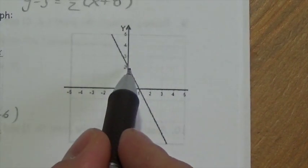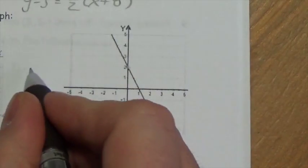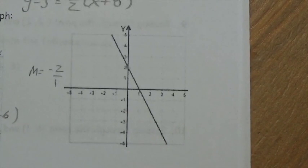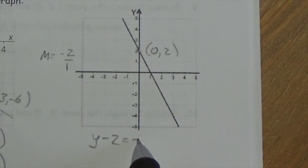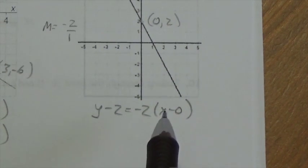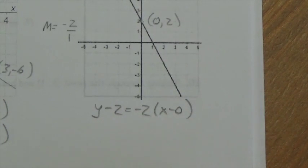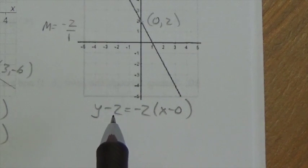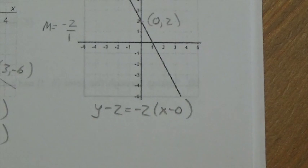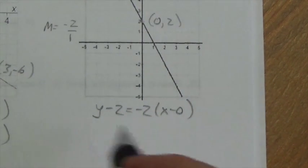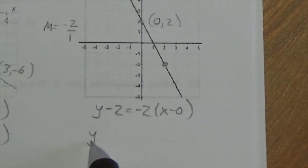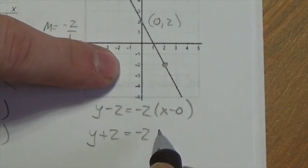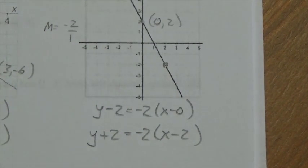For the third graph, it looks like the y-intercept is 2, and the slope is negative 2 over 1, so negative 2. If you plug in the y-intercept (0, 2): y minus 2 equals negative 2 times (x minus 0), which simplifies to y minus 2 equals negative 2x — that's almost slope-intercept form already. Instead, using the point (2, negative 2): y plus 2 equals negative 2 times (x minus 2), which looks a bit better.